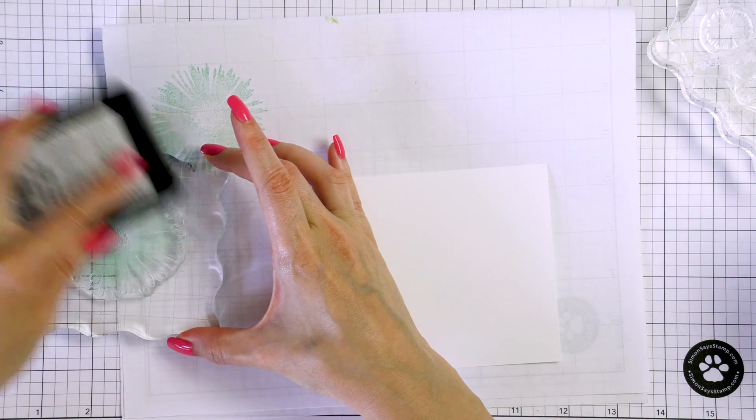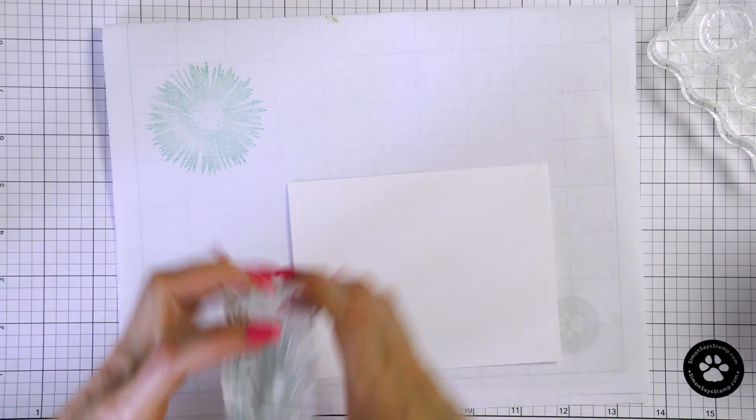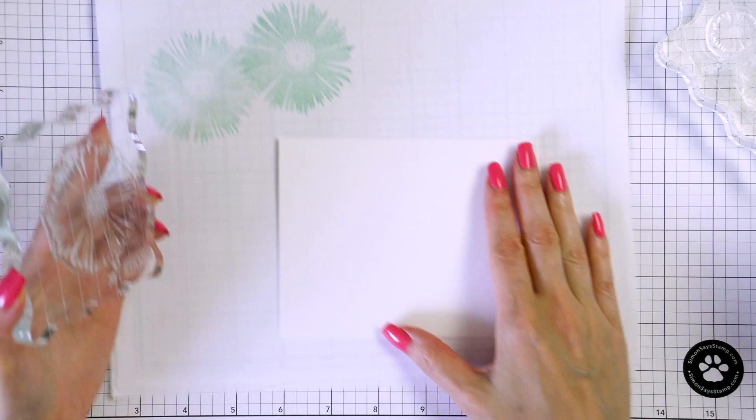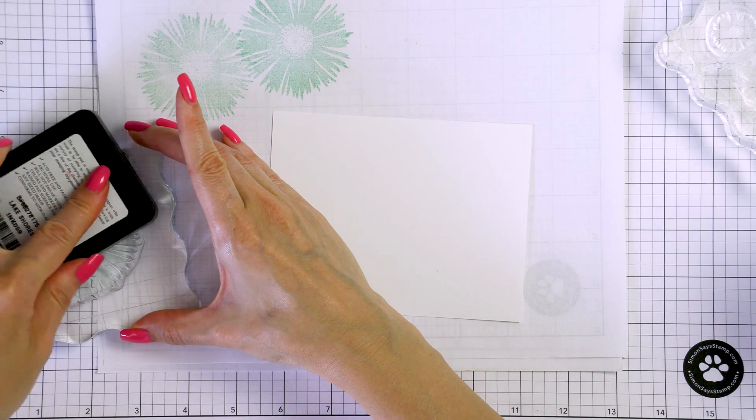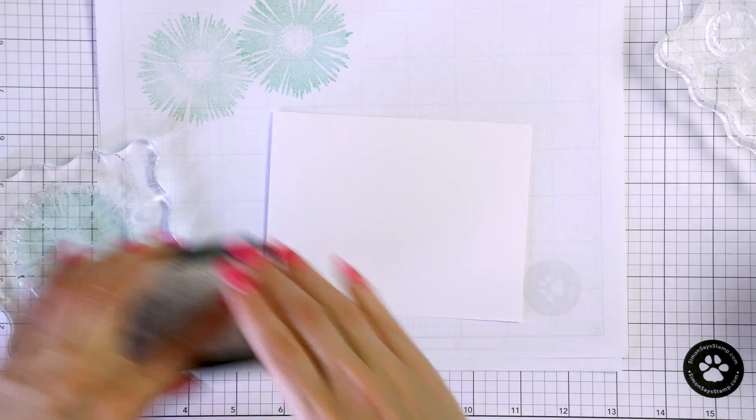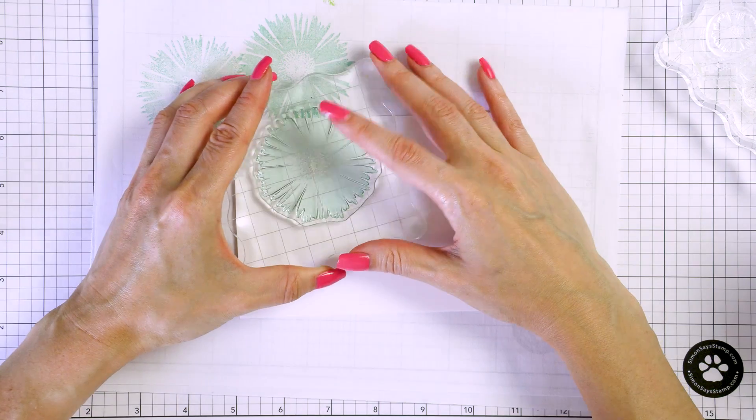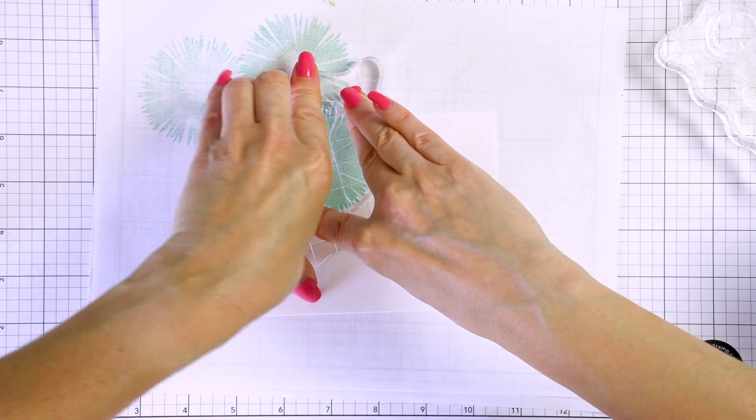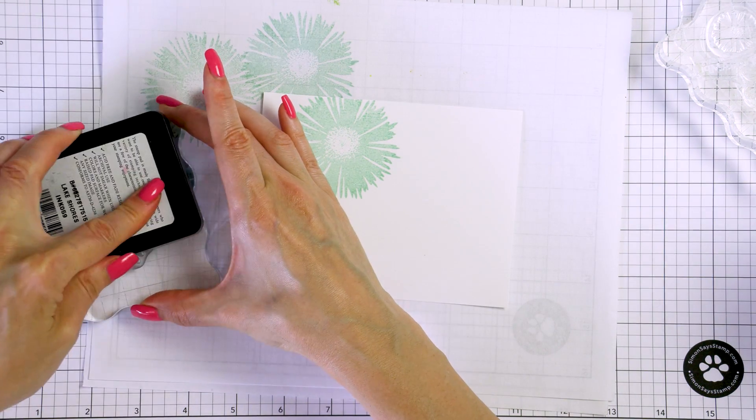I will be doing my stamping on Neenah solar white 80 pound cardstock and I'm not using my MISTI stamping tool but stamping these with clear blocks and that actually makes the stamping process go faster. I'm not looking for absolutely perfectly stamped images. These do stamp really well but should I have slight stamping imperfections I'm not going to worry about it because of the style of the background pattern I'm going for.